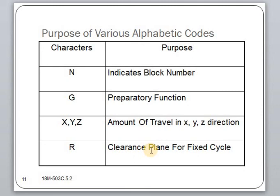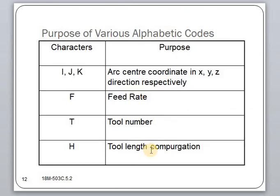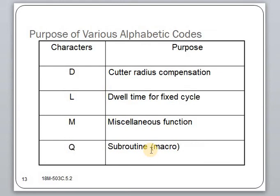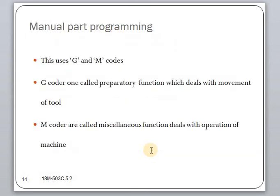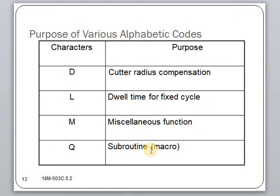This is the purpose of the various alphabetic codes in the word address format. N is used to indicate the block number; G is used for preparatory function; X, Y, Z indicate movement in the X, Y, and Z directions respectively; F is for feed rate; T represents the tool number; M represents the miscellaneous function; and Q represents the subroutine. These are the various parts we use in the word address format to write the NC part program.